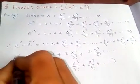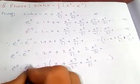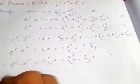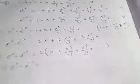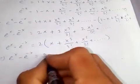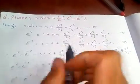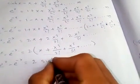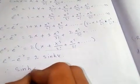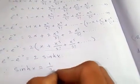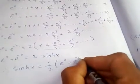And this series inside is exactly the same as sinh(x). Therefore sinh(x) equals half of e to the x minus e to the negative x, which completes the proof.